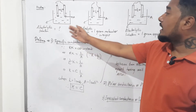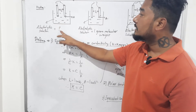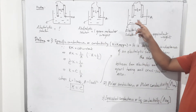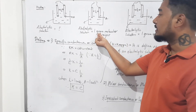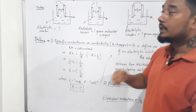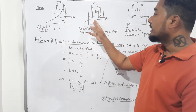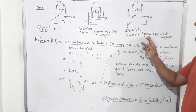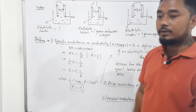Equivalent weight is something we have heard in the first chapter of the class 11 syllabus. So the three pictures are the same setup — the difference is: in the first, the quantity of electrolytic solution is not mentioned; in the second, 1 gram molecular weight is taken; and in the third, 1 gram equivalent weight is taken. Molecular weight expressed in grams is gram molecular weight; equivalent weight expressed in grams is gram equivalent weight.